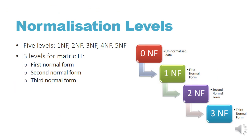In normalization, there are five levels. If you carry on and study IT after school, you'll probably learn about all of these. Luckily for matric, you only need to learn the first three levels: first normal form, second normal form, and third normal form.